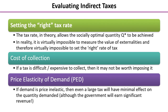Now some key general points when evaluating indirect taxes. The first is how difficult it is to set the right tax rate — we touched on this back in online lesson one. In theory, we can set an indirect tax to exactly equal the external cost associated with a particular market failure, and that therefore allows the socially optimal quantity to be achieved. But if you think about how difficult that actually is in reality, it's very hard to put a precise figure or value on externalities.